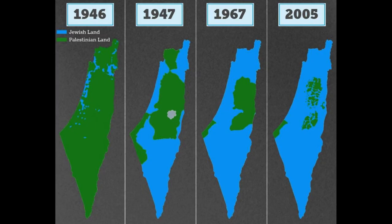In the years since 1948, the Israeli-Palestinian conflict has continued. Israel has occupied the West Bank and Gaza Strip since the 1967 Six-Day War. The Palestinians have sought to establish an independent state in the West Bank and Gaza Strip, with East Jerusalem as its capital.